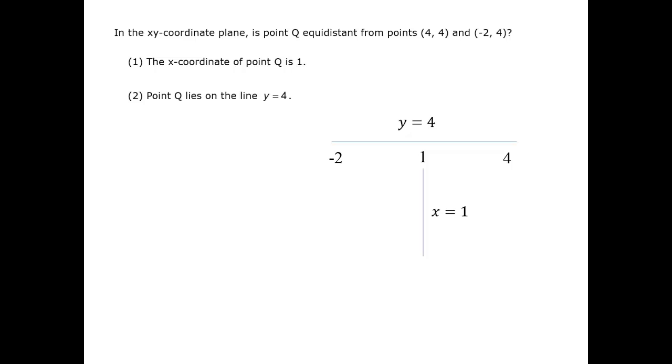Given that, let's move to the data statements, evaluating them separately first. Statement 1 tells us what we were just saying. If the x-coordinate is 1, then it lies on this line where all the points are equidistant to the two points given to us in the question.